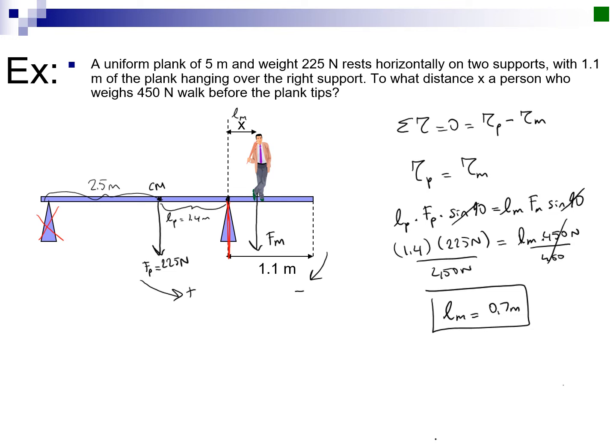Since this is exactly in the middle (although my drawing is a little off), this should be 2.5 meters, and the rest should be 2.5 as well. And since I know that from this support to the edge is 1.1 meters, subtracting 2.5 and 1.1, I find that this distance must be 1.4 meters. So that should be my leverage for the plank, and this unknown is my leverage for the man.